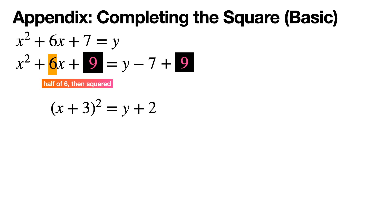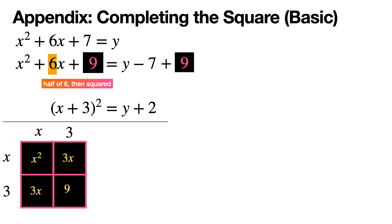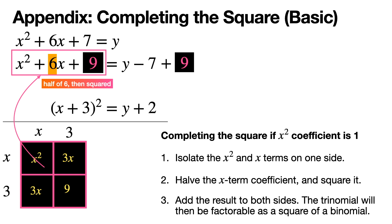You've completed the square — the left-hand side is now a squared binomial. To verify: using the box method, x times x is x squared, 3 times x gives two terms of 3x totaling 6x, and 3 times 3 is 9, recovering the original trinomial. In summary: isolate the x squared and x terms on one side, take half the x coefficient and square it, add that to both sides, and the trinomial will always factor as the square of a simpler binomial.